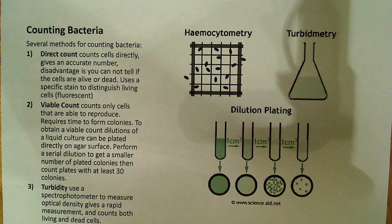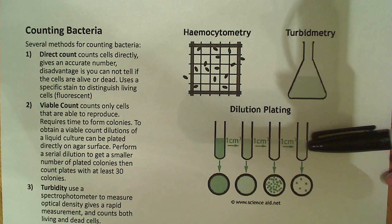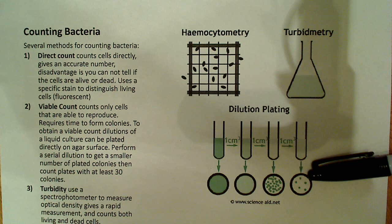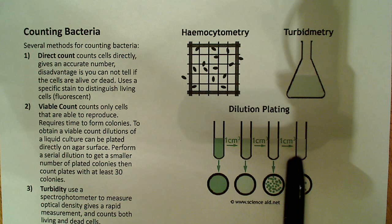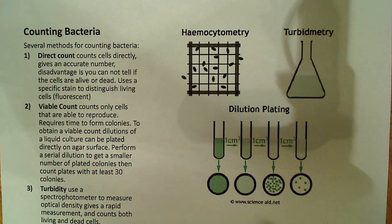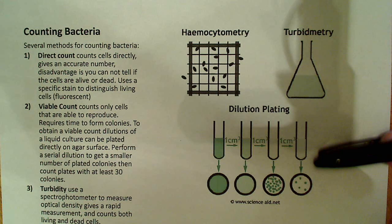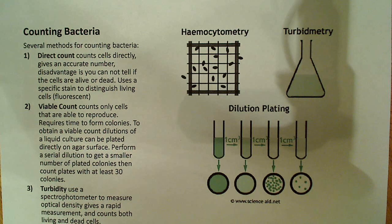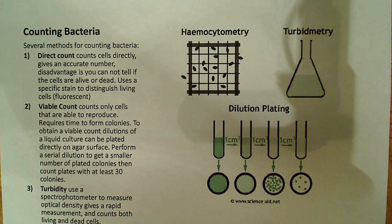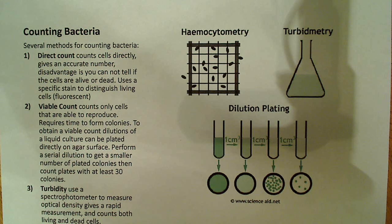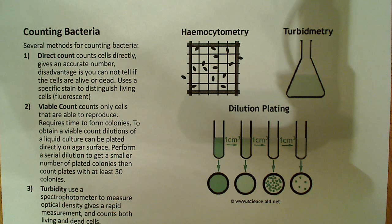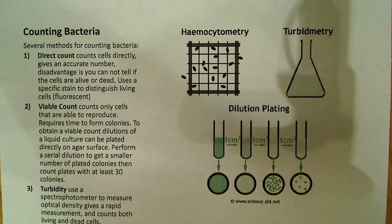To obtain a viable count, dilutions of a liquid culture can be plated directly on an agar surface. This might be your direct count, and this over here will be your viable count. You have these dilutions of your bacteria, and you plate it directly on agar plates. As you dilute more and more, you end up with less and less colonies that are going to be produced on the agar, on the solid medium, which means it's going to be easier to count. Once you perform the serial dilution and get a smaller number of plated colonies, you can then count the colonies on the plate. You usually want to make sure that you're counting only those that have at least 30 colonies.